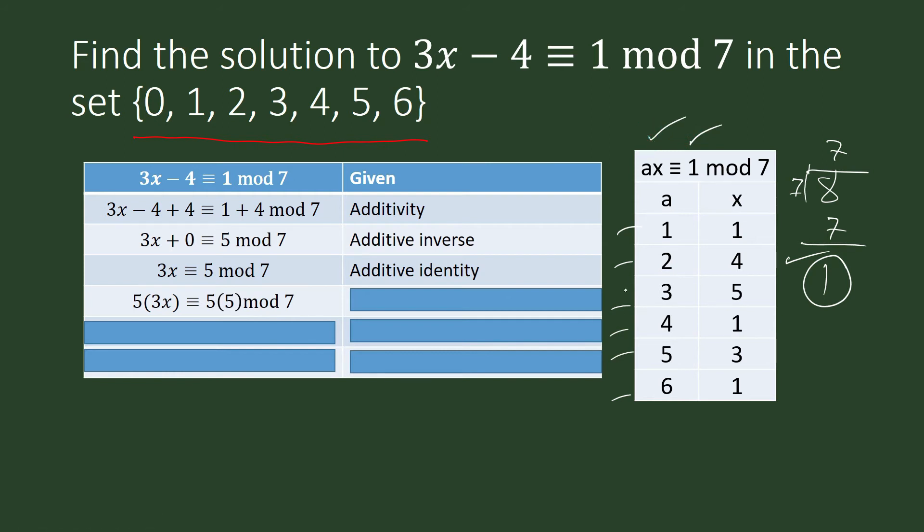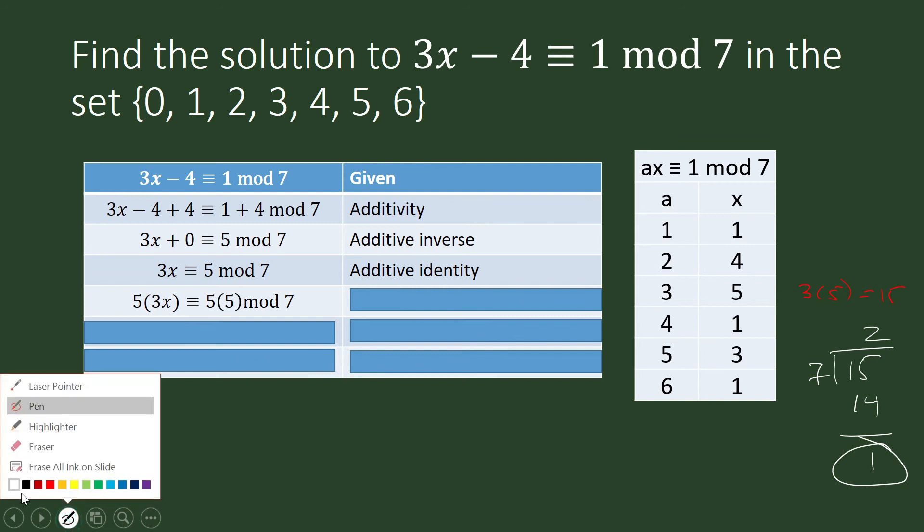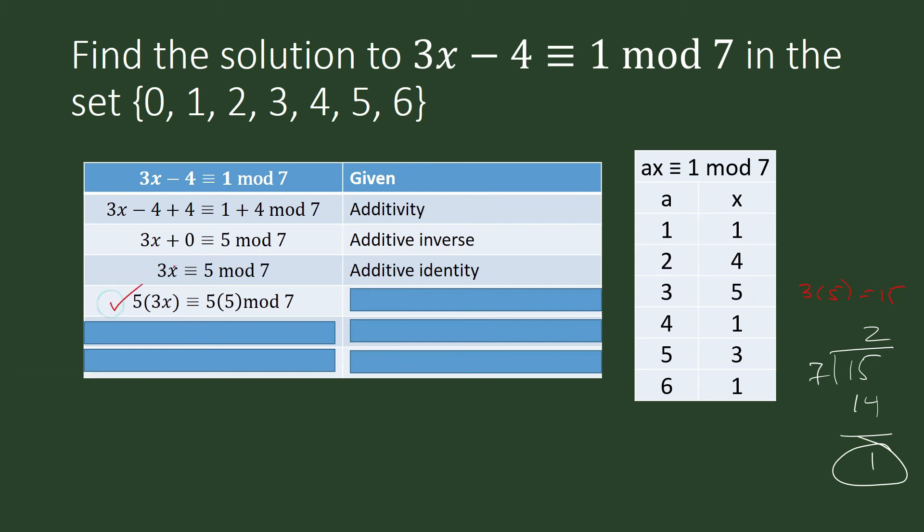We now go to 3. What is the multiplicative inverse of 3? It's 5. 3 times 5 is 15, and when we divide 15 by 7, it has a remainder that is equal to 1. The multiplicative inverse of 3 under multiplication modulo 7 is 5. So that's why we are multiplying 5 to both sides of our congruence equation.